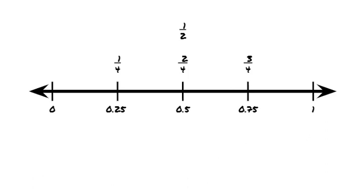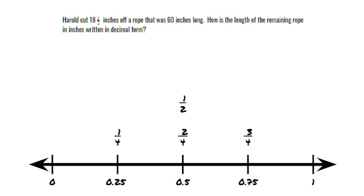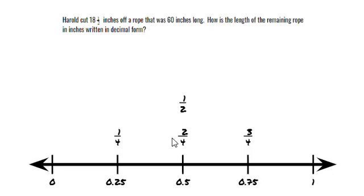Now let's apply this same principle to a word problem. Harold cut 18 and a half inches — and half is the same thing as 5 tenths — off a rope that was 60 inches long. How is the length of the remaining rope in inches written in decimal form? So we're going to have to write this as a decimal. Let's go ahead and change this into a decimal. So 18 and a half: our whole number is 18, but 18 and a half is the same thing as 5 tenths, because 5 is half of 10. So 18 and 5 tenths could look like this.